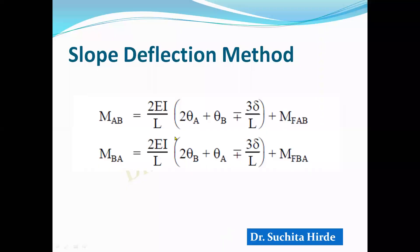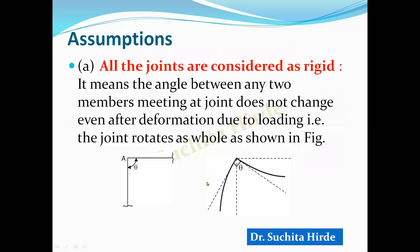Now let us see the assumptions made in deriving these equations. First assumption: all joints are considered rigid. A rigid joint means if the angle between two members at a joint is 90 degrees before deformation, then because of loading the joint rotates as a whole. The angle between any two members meeting at the joint does not change even after deformation due to loading.